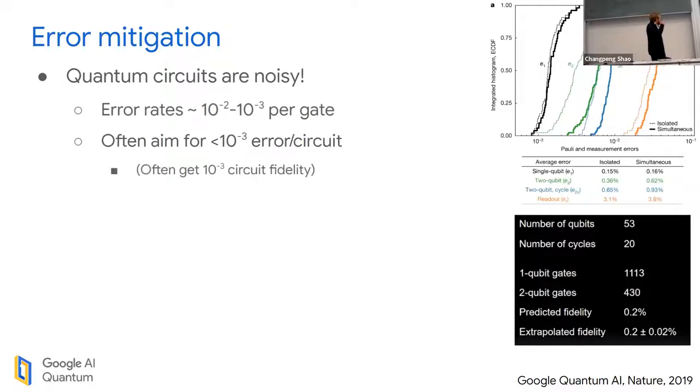Quantum circuits are noisy. Noise is probably the biggest challenge that we face towards doing anything in quantum computing. The error rates that we have on today's devices are somewhere between 10^-2 to 10^-3 per gate. Here are the error measurements that were taken on the day when the 2019 beyond classical experiment was run.